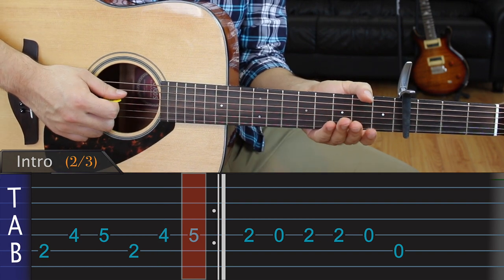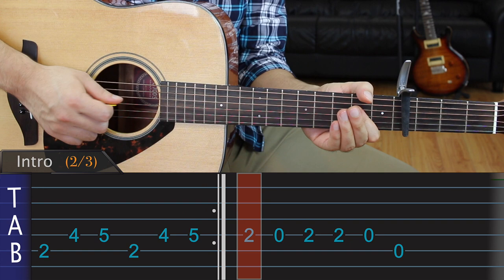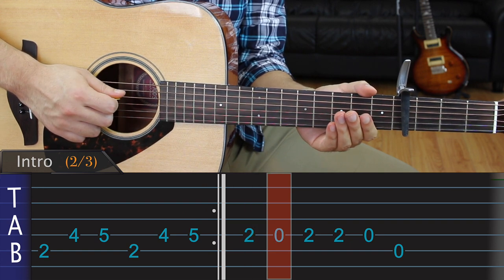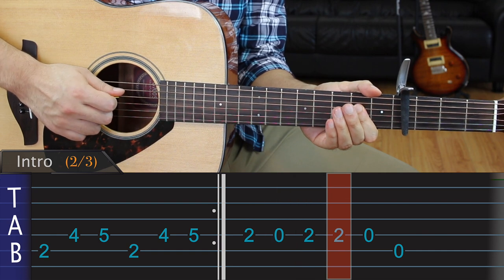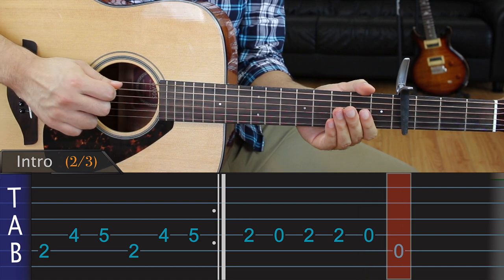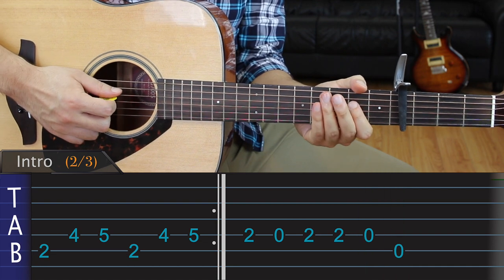After this, we use our index to play the second fret of the D string, then an open D, then the second fret twice, followed by an open D, and finally an open A. This is how it sounds like in real time.